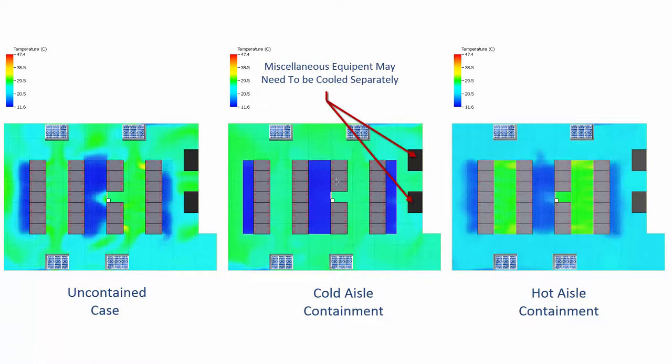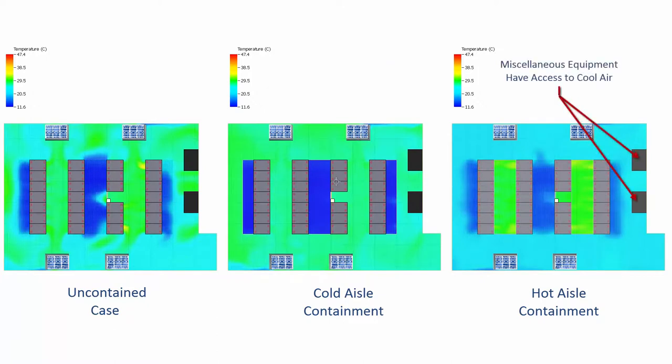Unlike the cold aisle containment configuration, the hot aisle system does not require any special consideration for non-rack mounted equipment. As well as reducing the mixing of supply and exhaust air, hot aisle containment configuration also increases efficiency by providing a net increase in the ACU return temperature. Increased return temperatures enable better heat exchange across the cooling coils and therefore increase the efficiency of the cooling units.